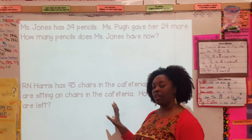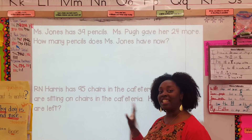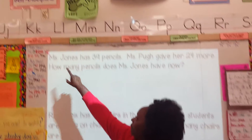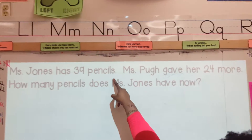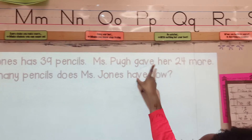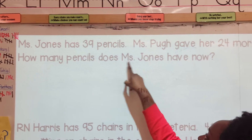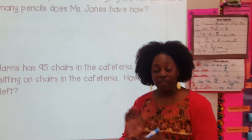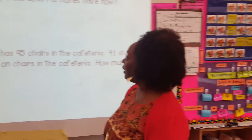We have two story problems here. First we're going to read through the information and we're going to decide what we're going to have to do. Let's look at the first one. Ms. Jones has 39 pencils. Ms. Pugh gave her 24 more. How many pencils does Ms. Jones have now? The very first thing we have to do, we've got to figure out what information they've given us.